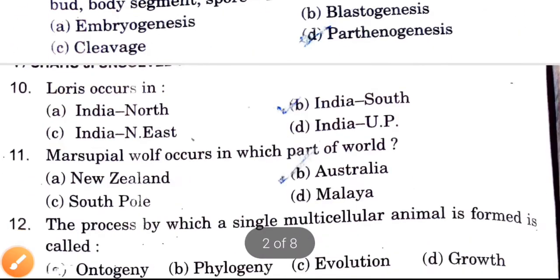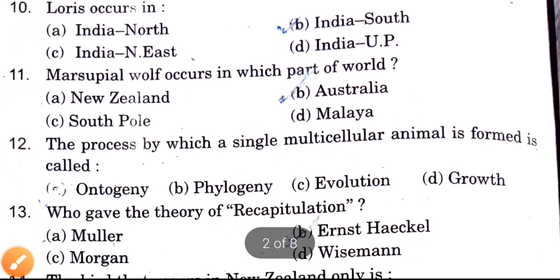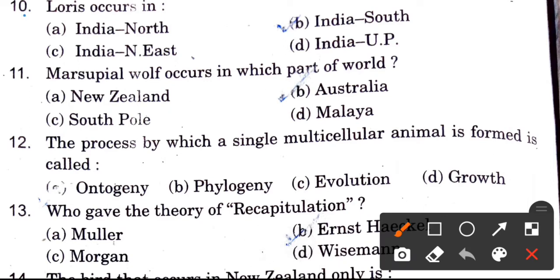Next question: Loris — where is this animal found? Options are India North, India South, India East, India North East, India UP. The answer is India South. In India, Loris is found on the southern side.